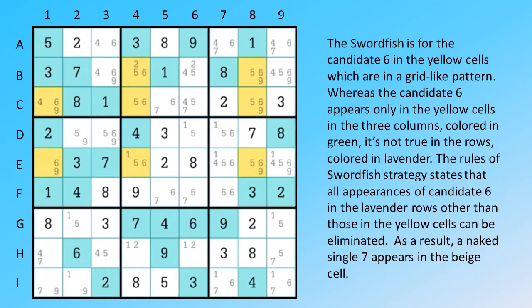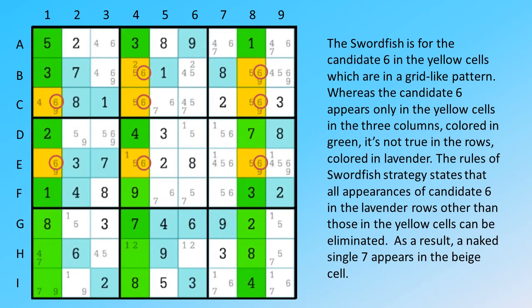The swordfish is for the candidate 6 in the yellow cells, which are in a grid-like pattern. Whereas the candidate 6 appears only in the yellow cells in the three columns,